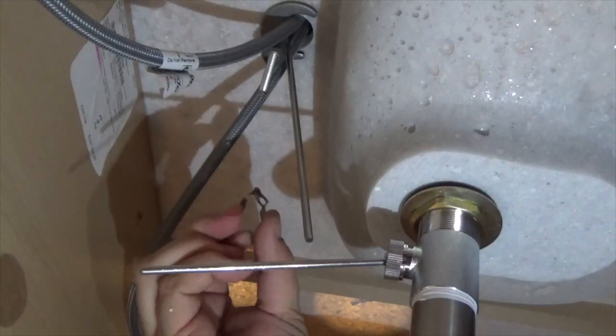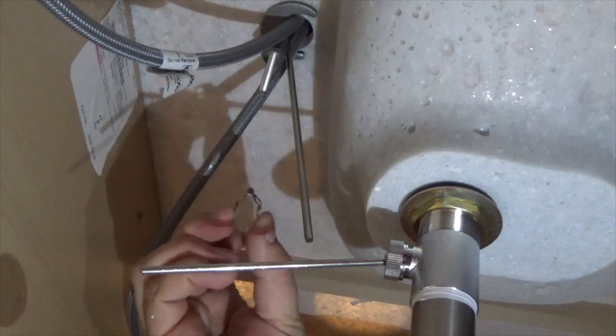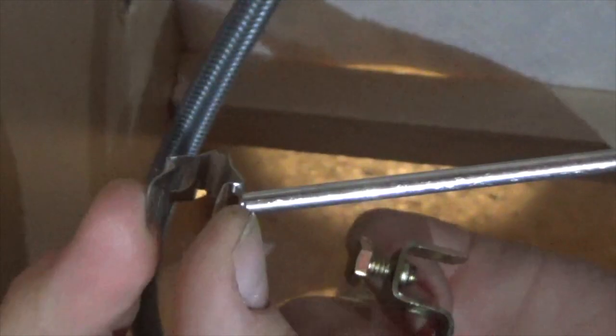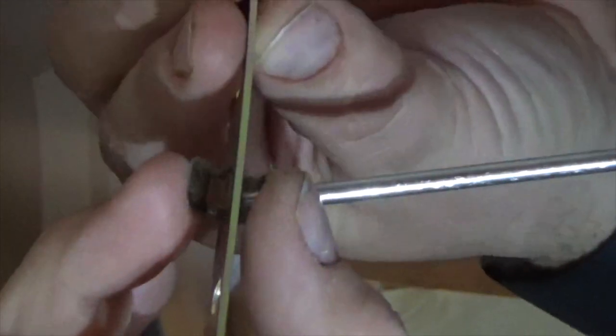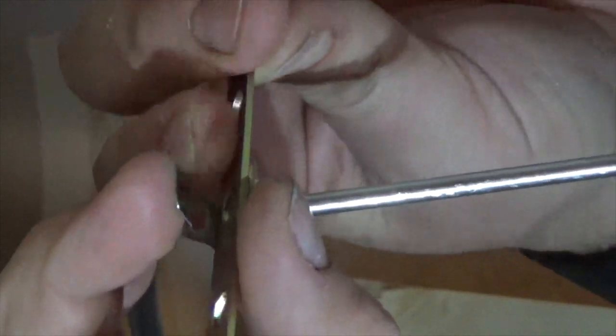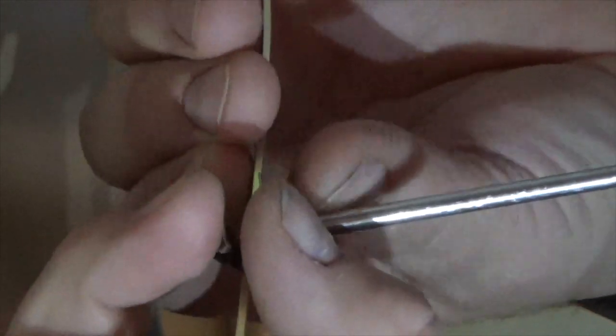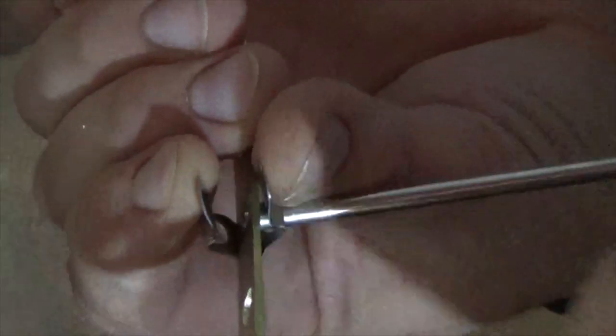Next, obtain the pivot rod clip. Squeeze the clip to align its holes. Insert the end of the pivot rod into one hole, then catch the designated hole in the strap, and slide the rest of the way through the second hole in the clip. The end product should look like this.